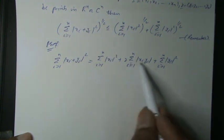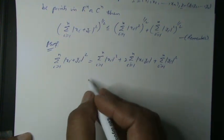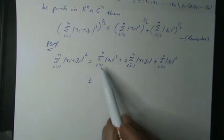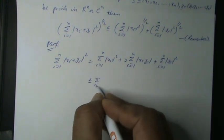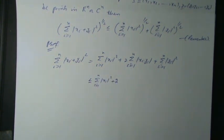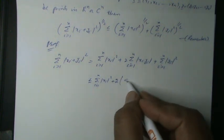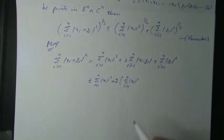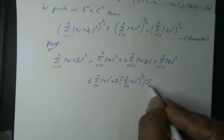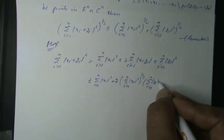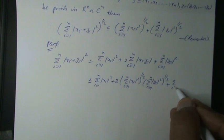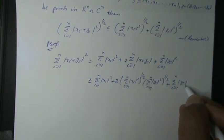Using the Cauchy-Schwarz inequality, it can be written as: Σ(i=1 to N) |Xi|² + 2·[Σ(i=1 to N) |Xi|²]^(1/2) · [Σ(i=1 to N) |Yi|²]^(1/2) + Σ(i=1 to N) |Yi|².